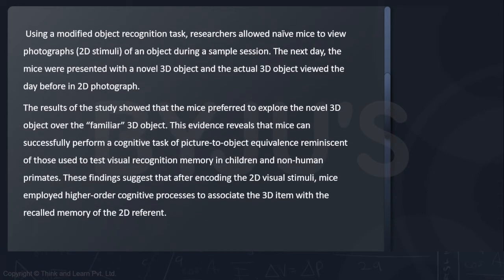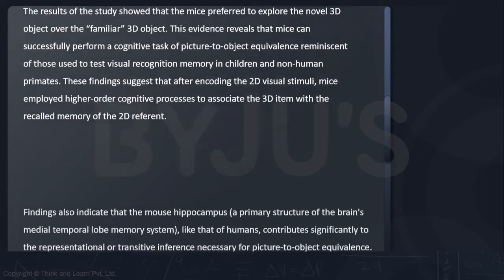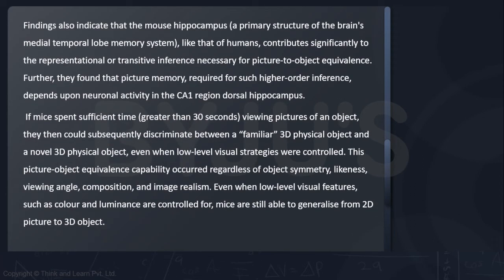And it was also found that the rodents' hippocampus, an area of their brain, played a very significant role in this recognition, in this visual recognition. And incidentally, in humans also, this hippocampus only contributes significantly to this representational or transitive inference.